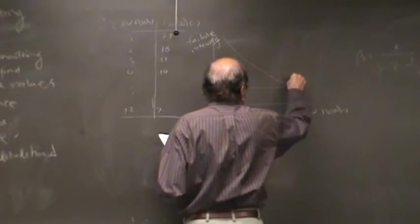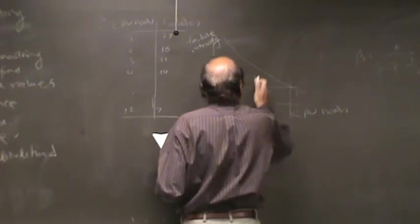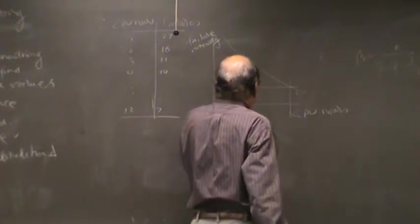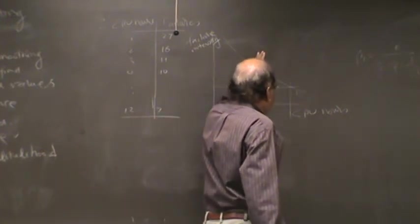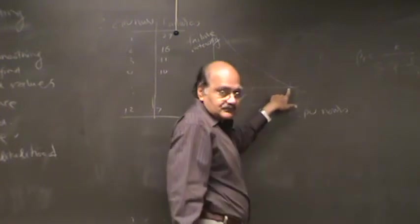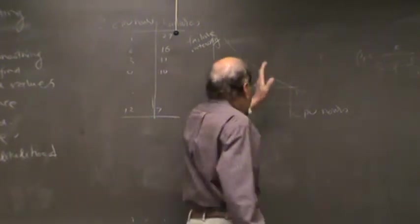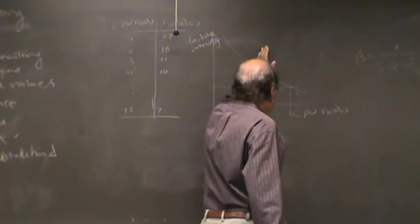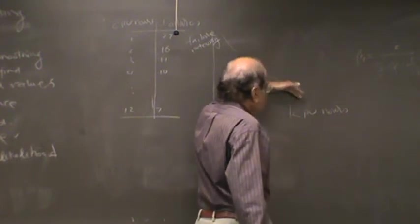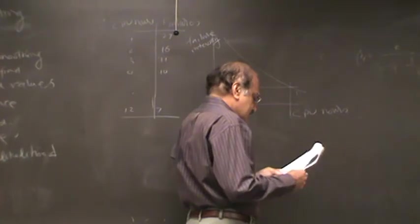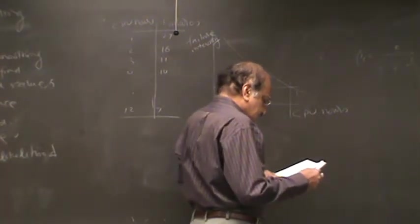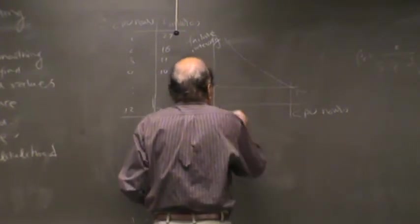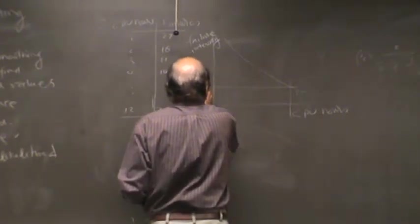Here is your target failure intensity. You want to extrapolate. Let's say you have only this much data. Then you need to extrapolate and find out when you will reach the target. So based on this much data you fit the curve, make a prediction of when you will reach the target. Your failure intensity target could be one per hour.